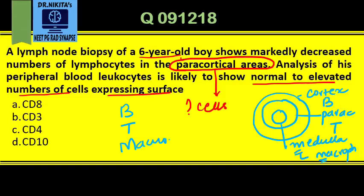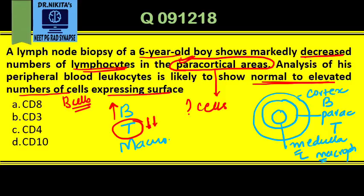In the question, lymphocytes in the paracortical areas are decreased — so basically the T cells are decreased. If T cells are decreased, then B cells will be normal or increased. So you'll have a normal to elevated number of B cells. Among the options — CD8, CD3, CD4, CD10 — the B cell marker is CD10, so the answer is CD10.